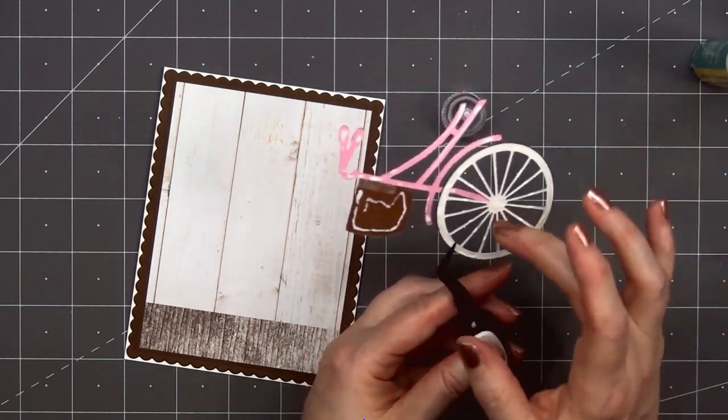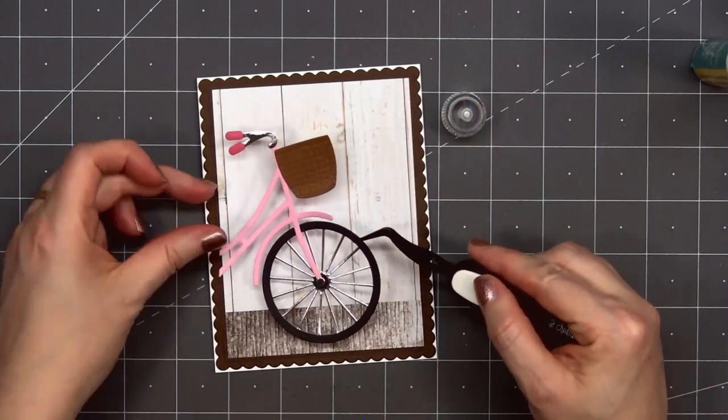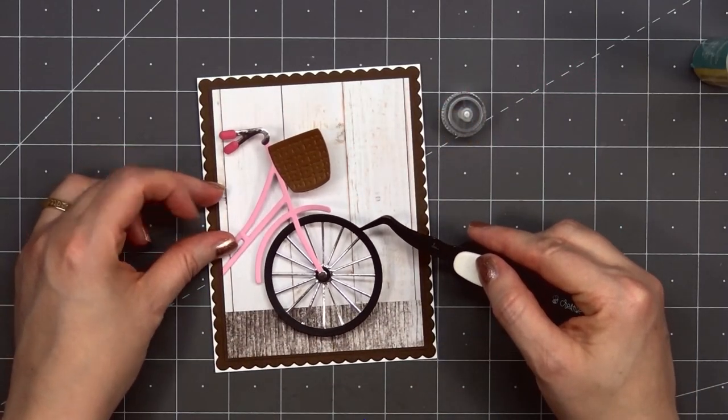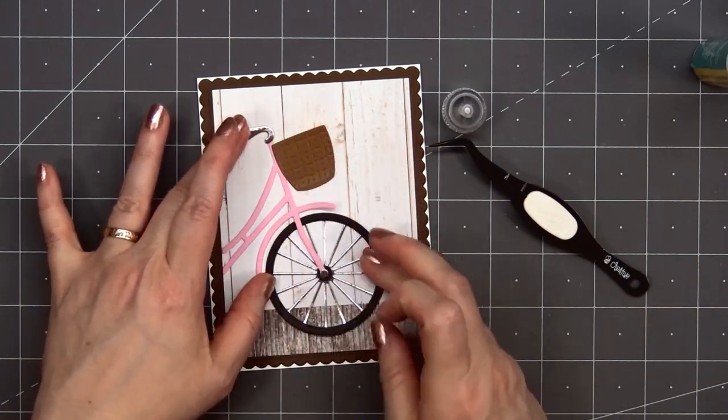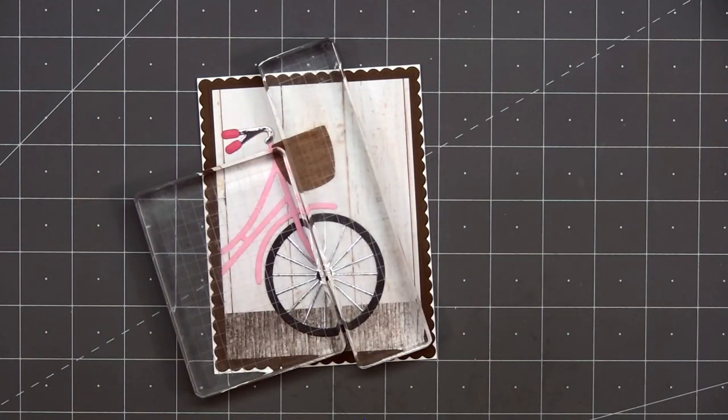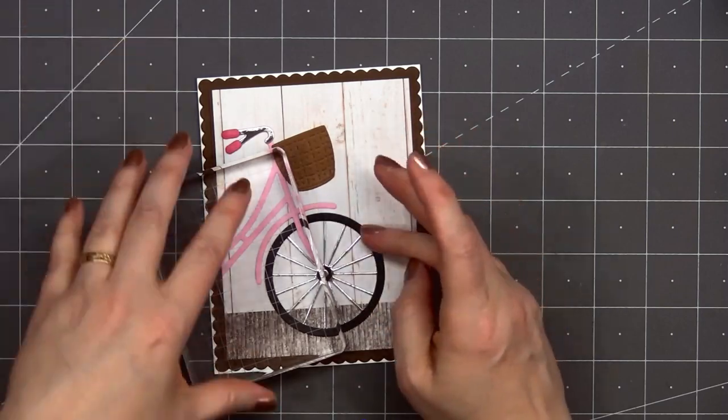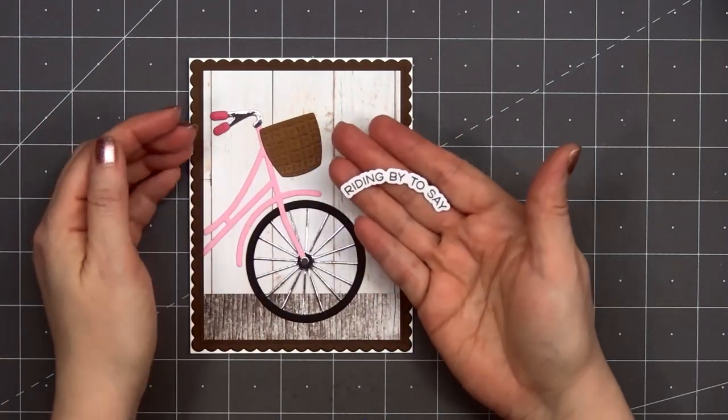Now I'll remove the release paper on that tape, add liquid adhesive on the back of the bike and adhere it onto the front of my card. This bike is so cute. I bought the die set last year and this is the first time I've used it. I think I definitely need to pull it out some more. I did place some acrylic blocks on top for some added weight while I let that glue adhere.